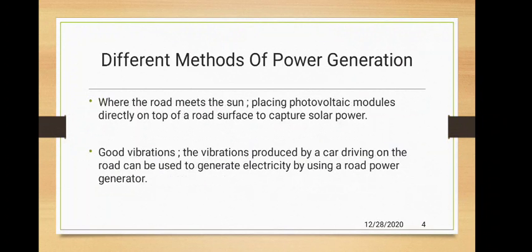There are basically two methods being used for road power generation. The first is using solar roadways, where solar cells are used to tap the energy of the sun and convert it into electrical energy. The second method includes using vibrations or kinetic energy. The vibrations produced by a car driving on the road can be used to generate electricity by using a road power generator.